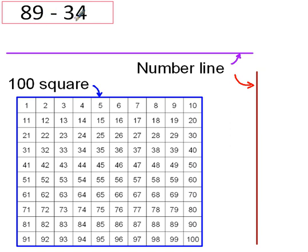89 take away 34. So splitting the second number into units and tens, what I would be doing then is taking away 4 and then taking away 30. On a number line, this is how I would draw it out. 89 is my starting number, so that's the first number that I need to write on the number line. I'm taking away 4 first of all, and then taking away 30.